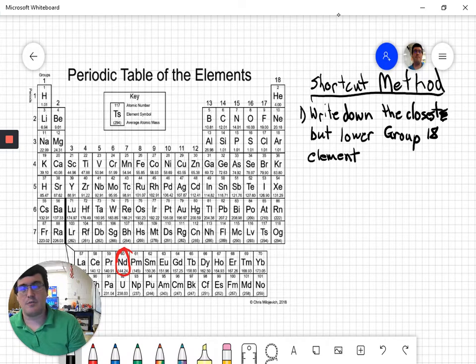So where's group 18? Well, if you notice, the groups are up here on the top, and group 18 is column number 18. So we need to find the element that is closest but still lower than 60. Our neodymium is element number 60. So we look down here, 2 is lower, 10 is lower, 18 is lower, 36 is lower, but none of those is closer than element number 54.